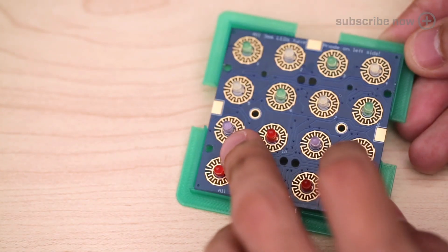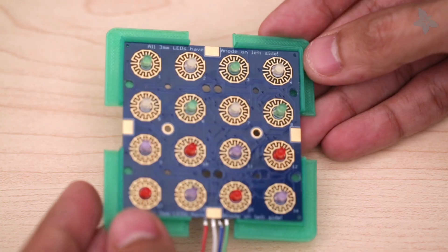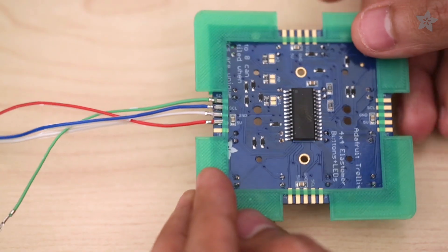The Trellis PCB and buttons tightly snap onto the printed tray. The tray is designed to expose the wire connection so that they can pass through to the Arduino.